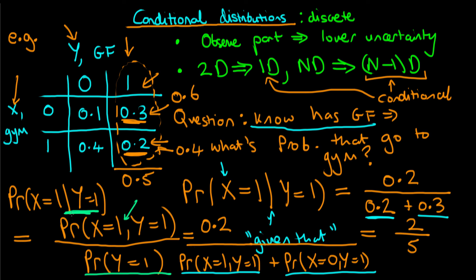We now know how to calculate the conditional distribution for discrete random variables. We take the joint probability of the two things in our rule — here, P(X=1, Y=1) — and divide it by the probability of the conditioned variable, P(Y=1). Fortunately, the rule for calculating conditional distributions is exactly the same for continuous distributions, meaning things are no more difficult when we're dealing with the continuous case.